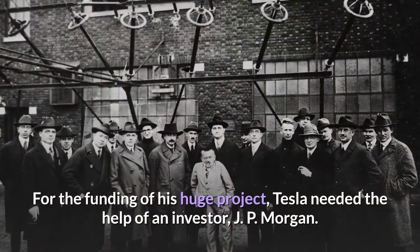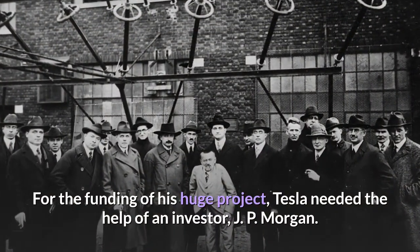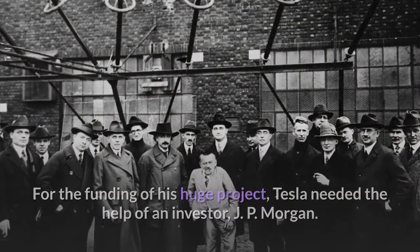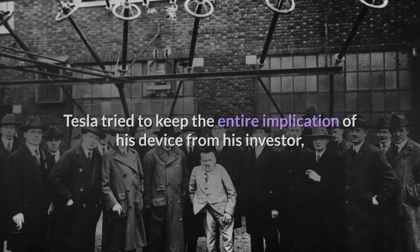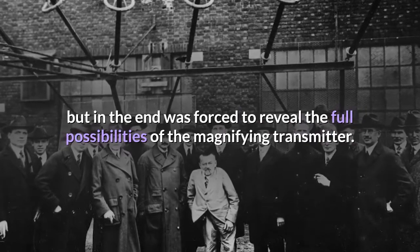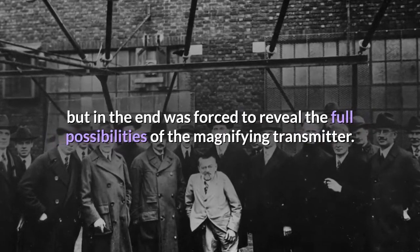For the funding of his huge project, Tesla needed the help of an investor, JP Morgan. Tesla tried to keep the entire implication of his device from his investor, but in the end was forced to reveal the full possibilities of the magnifying transmitter.